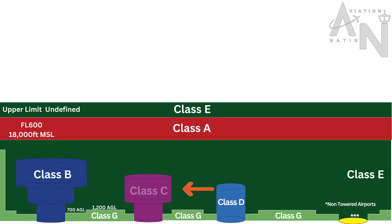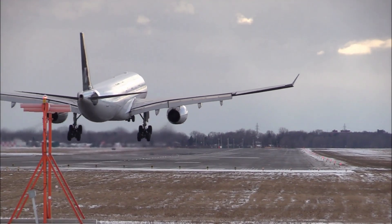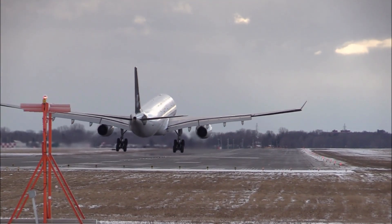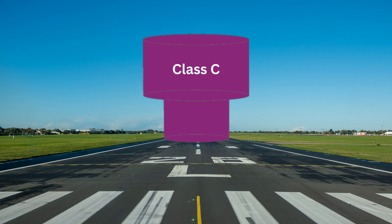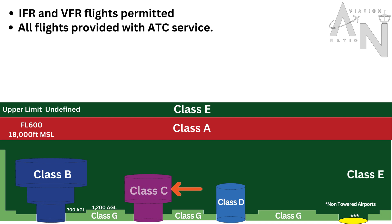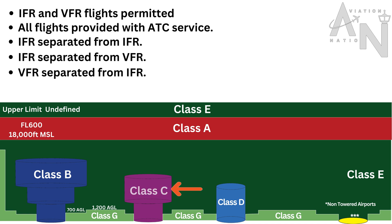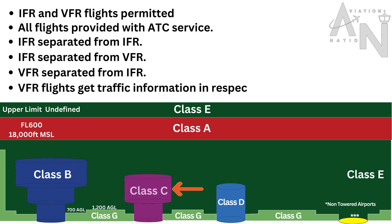Now let's discuss Class C airspace. Class C airspace is typically found around medium-sized airports. It has two layers, and to enter, you need to establish two-way radio communication with the controlling ATC facility. This airspace is used for both IFR and VFR flights, with all flights provided with ATC service. IFR flights are separated from IFR, IFR is separated from VFR, VFR flights are separated from IFR, and VFR flights get traffic information in respect of other VFR traffic.